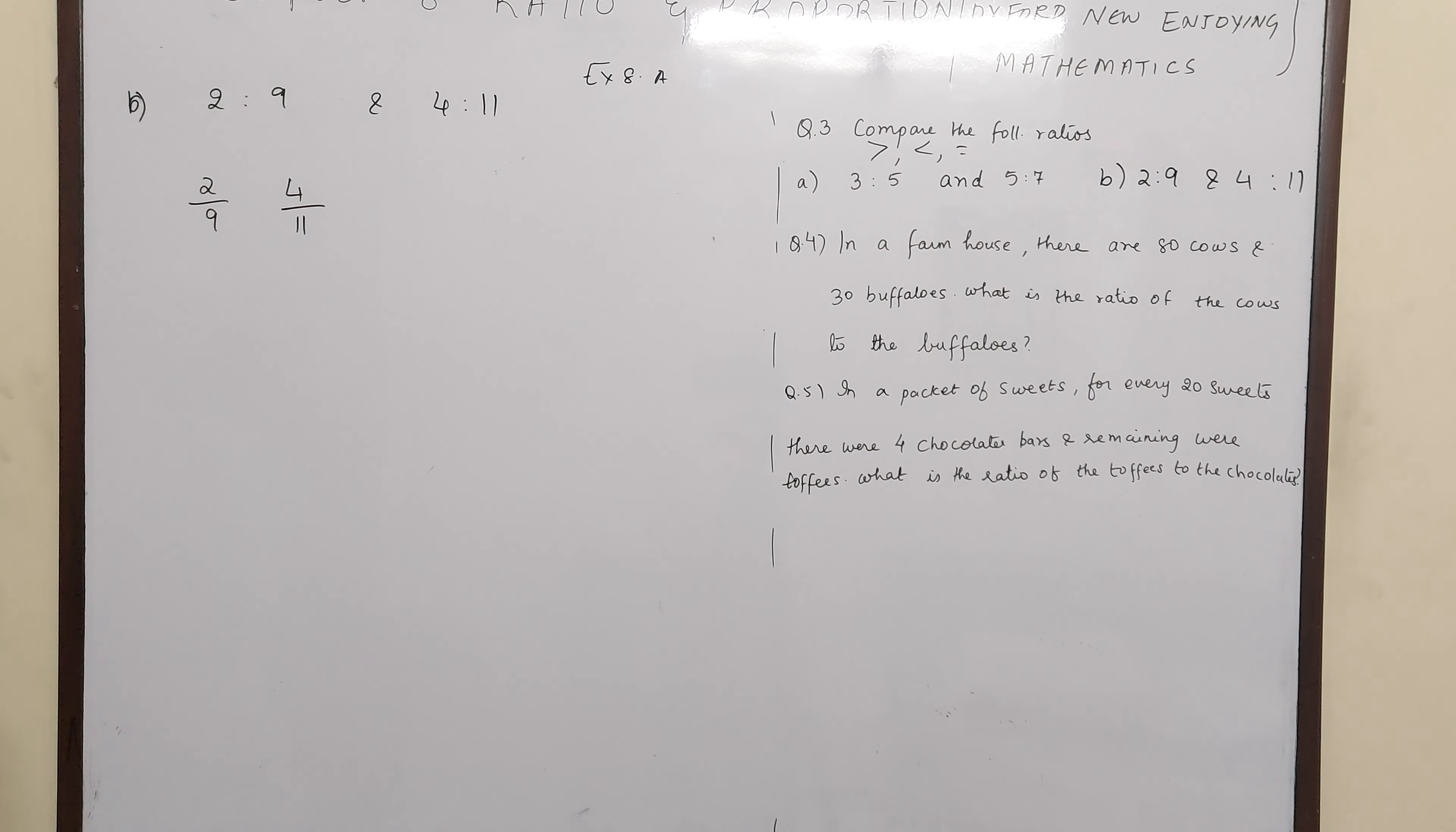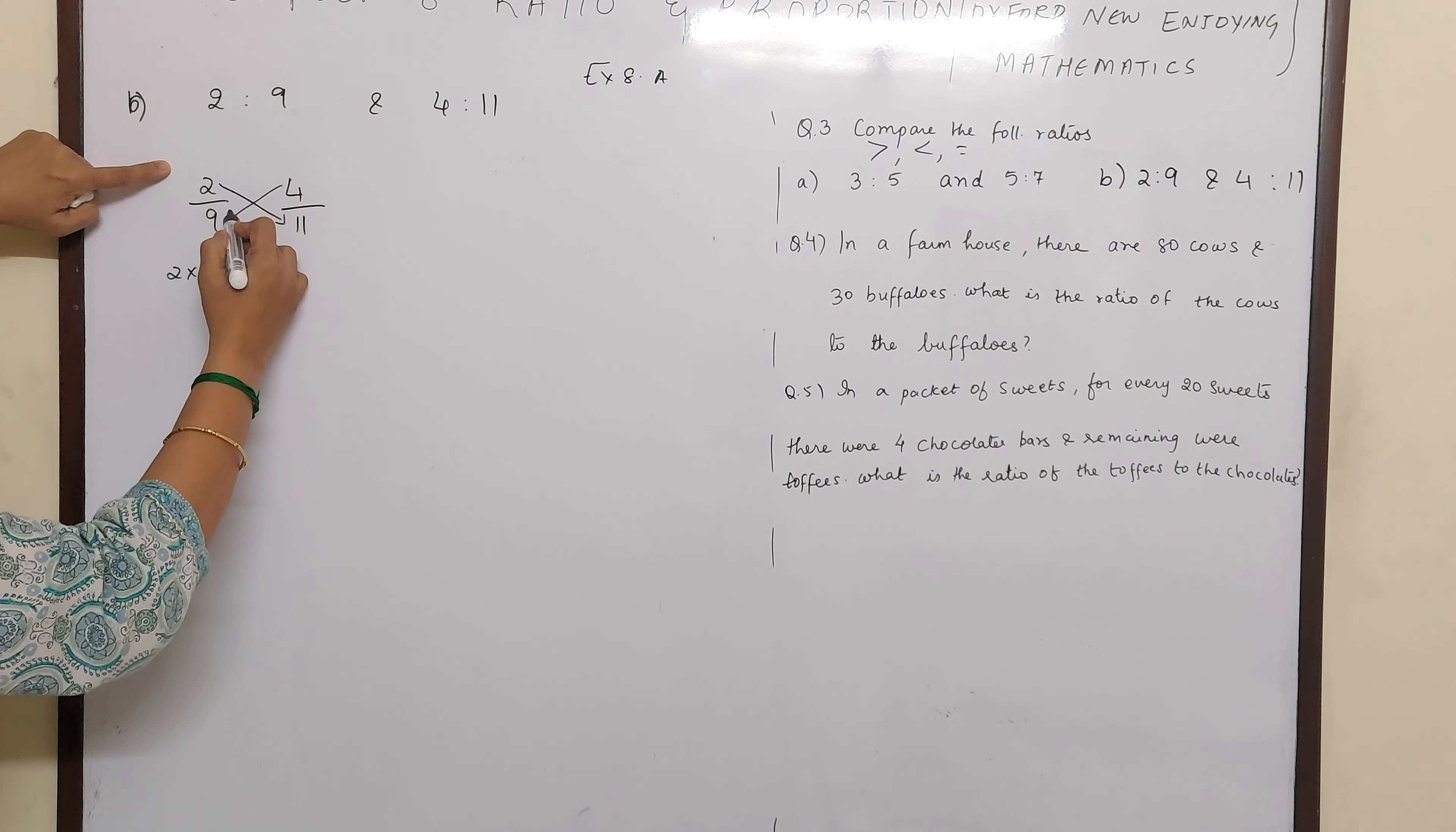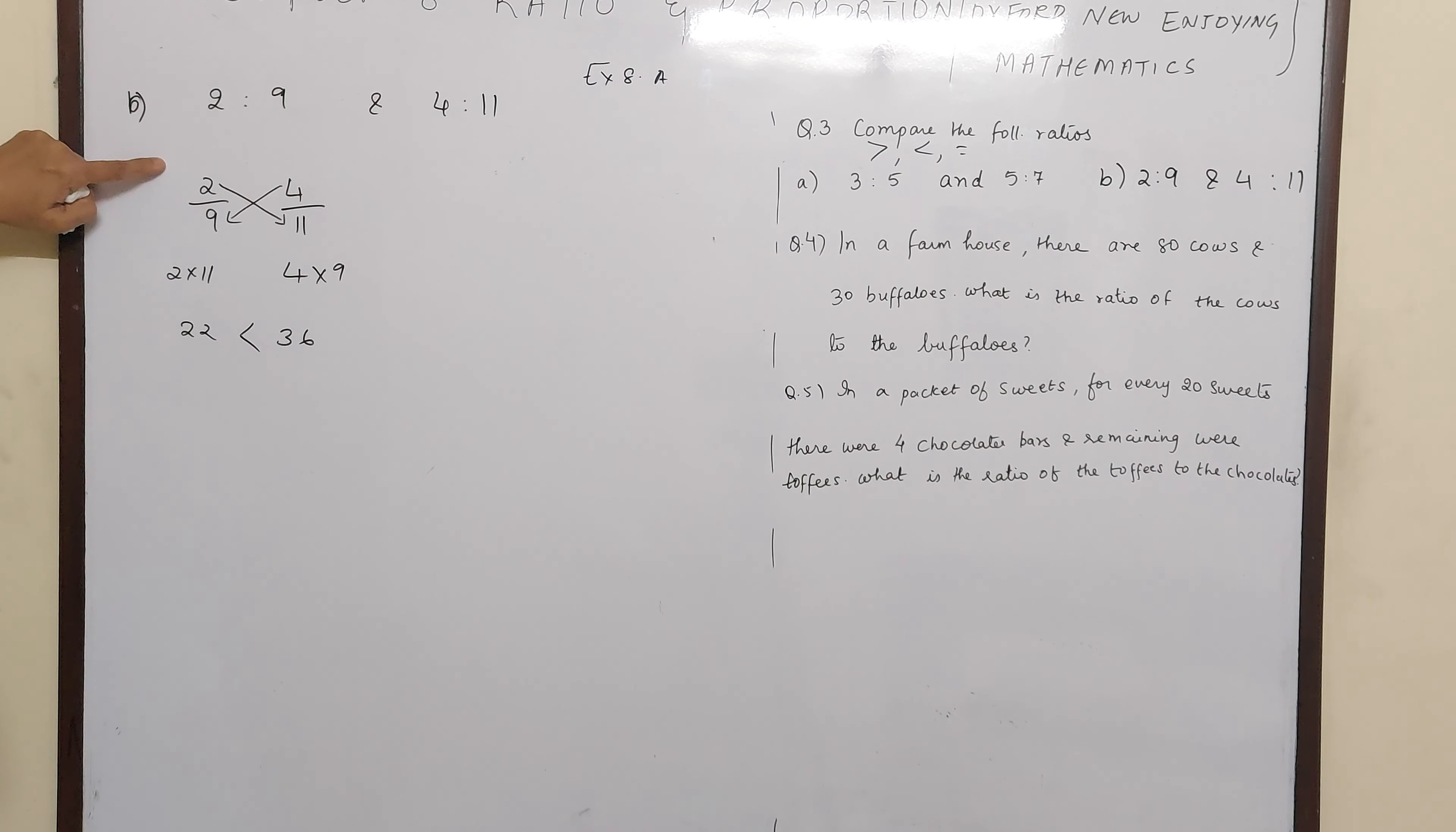So first is cross multiplication method. If you are teaching, you can do this simple way. 2 by 9 and 4 by 11. So what does the cross multiplication method say? Numerator with the opposite denominator. So 2 elevens are, and here right side numerator with the opposite denominator, 4 into 9, 22 and 36. So this is your answer.